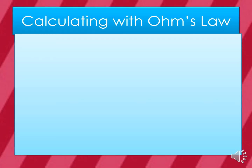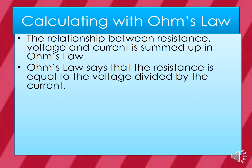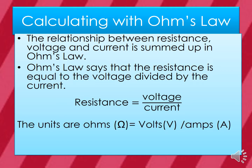Calculating with Ohm's Law. The relationship between resistance, voltage, and current is summed up in Ohm's Law. Ohm's Law says that resistance is equal to the voltage divided by the current. The formula is: Resistance equals voltage divided by current. The units are ohms equals volts divided by amps.